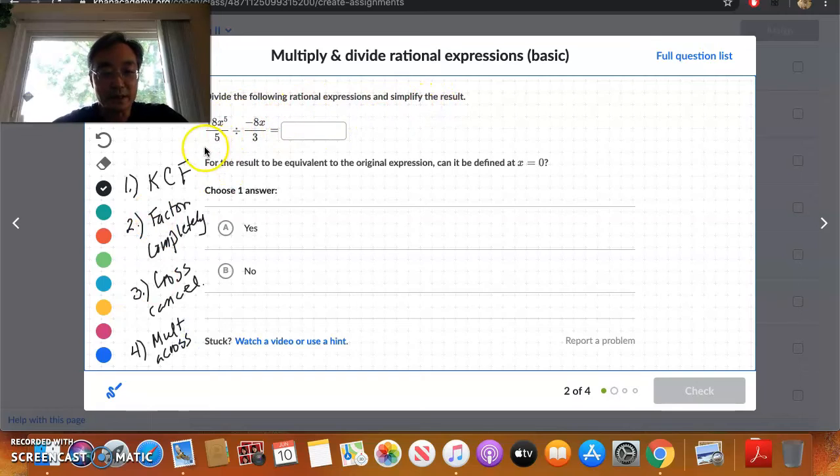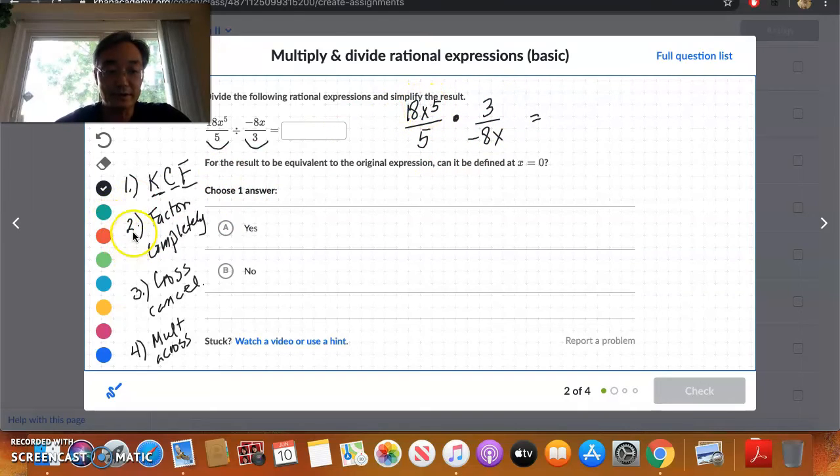Keep, change, flip. So keep the first expression exactly the way it is. Change, so we kept the first expression. Change the division into a multiplication. And then flip our second expression. So this might be 3 over negative 8x. And so our keep, change, flip is done. Now, everything is factored. Everything is just a monomial. So again, there's nothing to factor. We've done that. Cross-cancel.